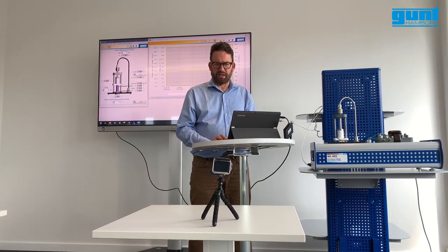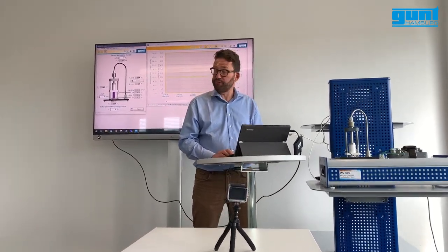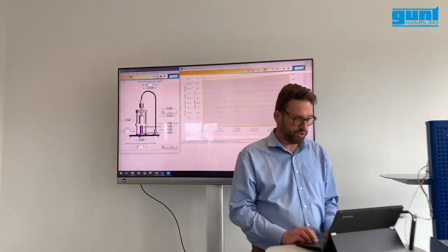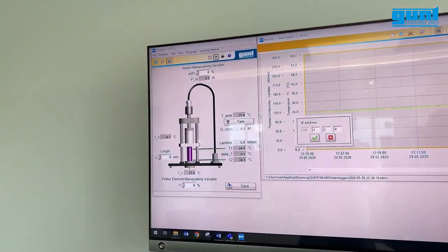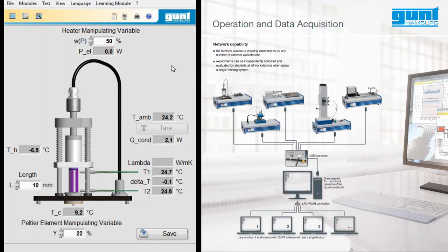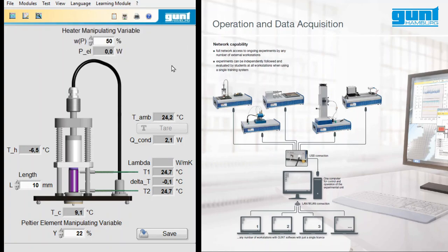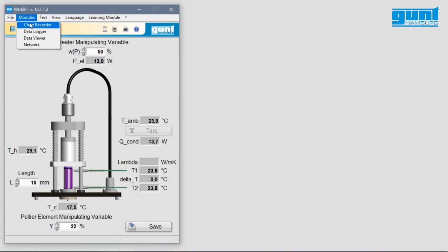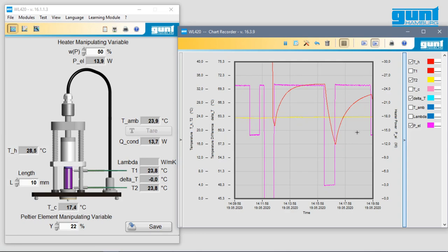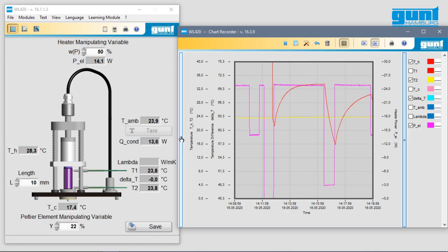All our units equipped with software version 2.0 can transmit experiment measurements via network. You can check whether your specific unit is equipped with software version 2.0 by this button here. The forwarded IP address can be accessed from an unlimited number of remote workstations, and experiments can be monitored and evaluated by all participating students using one single GUNT unit.